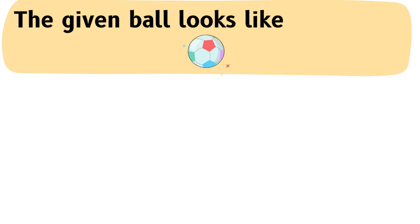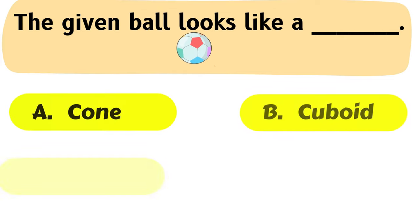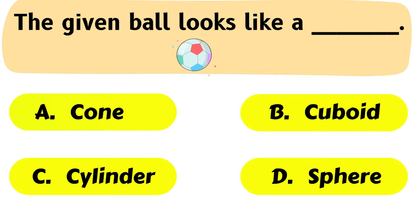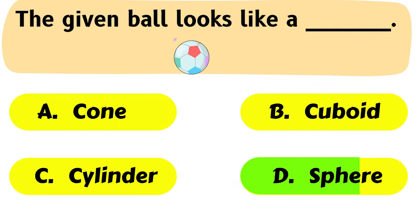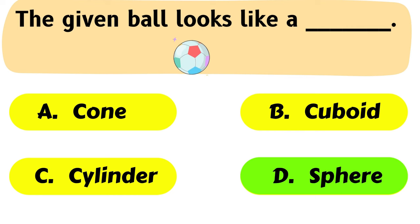Question No. 31: The given ball looks like a ___. A. Cone, B. Cuboid, C. Cylinder, D. Sphere. The correct answer is Option D: Sphere.